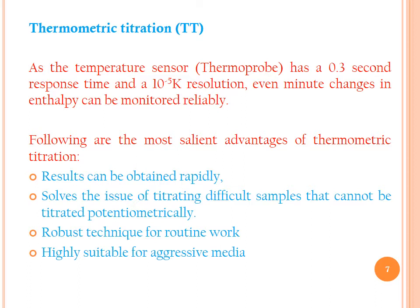The most salient advantages of thermometric titration include: results can be obtained rapidly; it solves the issue of titrating difficult samples that cannot be titrated potentiometrically—where the EMF of the reaction mixture is measured as a function of the titrant added; and it is a robust technique suitable for routine work in aggressive media. Robustness means the method gives reliable results with good accuracy and precision even when different steps in the technique are varied.